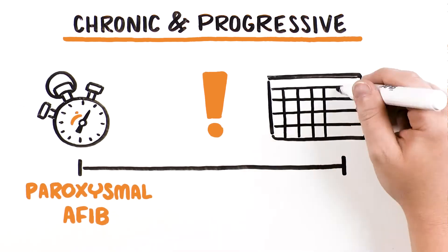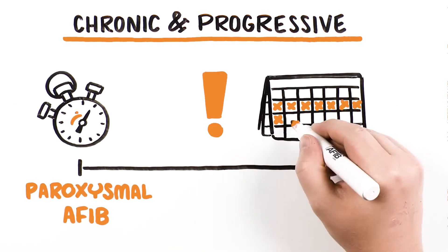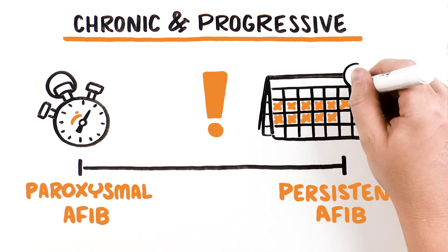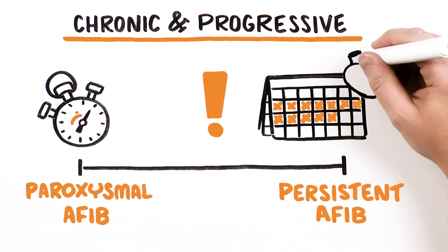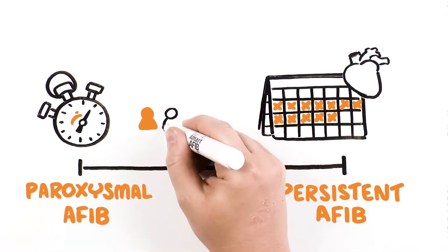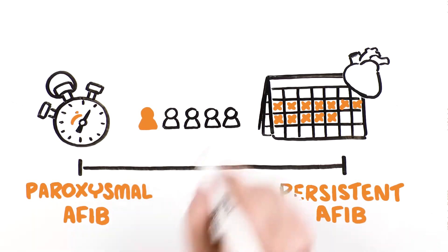Episodes over time can prolong. Episodes lasting over seven days is known as persistent AFib and results from structural changes to your heart due to underlying risk factors. One to five patients progress from paroxysmal to persistent in one year.